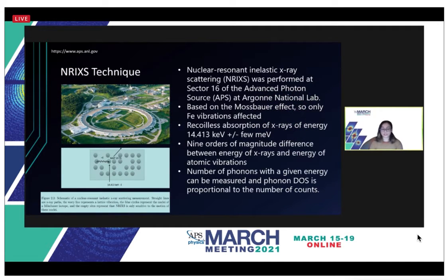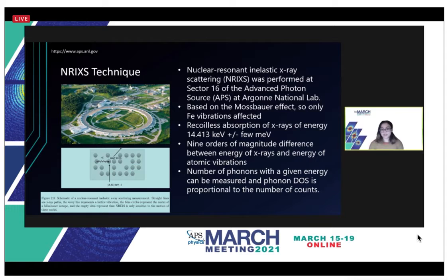We began this observation using the nuclear resonant inelastic x-ray scattering (NRIXS) technique. This was conducted at the Advanced Photon Source at Argonne National Lab. This technique is based on the Mössbauer effect, which describes the phenomenon of a nucleus that can absorb gamma rays without losing any energy. The recoilless absorption of x-rays is measured to be 14.413 kiloelectron volts for the iron-57 isotope. The measurements taken during this technique are described in the schematic shown here.